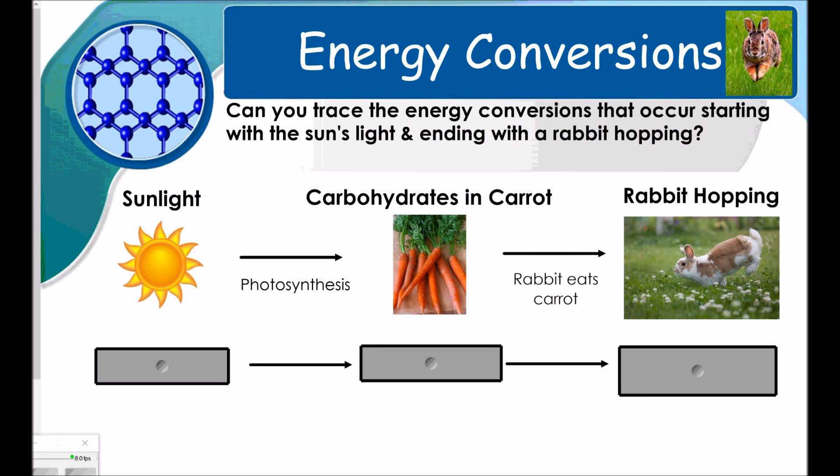So here's a good example of energy conversions. Can you trace the energy conversion that occurs starting with the sun's light and ending with a rabbit hopping? So we're going to start with sunlight. This is radiant energy. The sunlight is going to cause photosynthesis to occur in carbohydrates in a carrot, which store chemical energy. And then the rabbit is going to eat the carrot, and the rabbit is going to be able to hop. So this is kinetic energy.